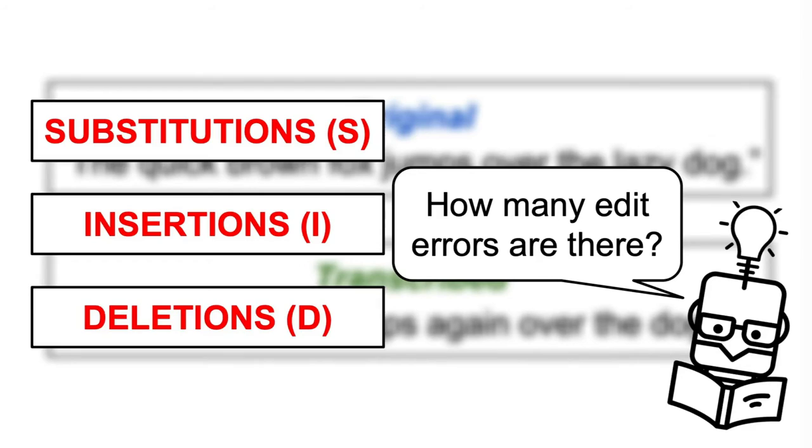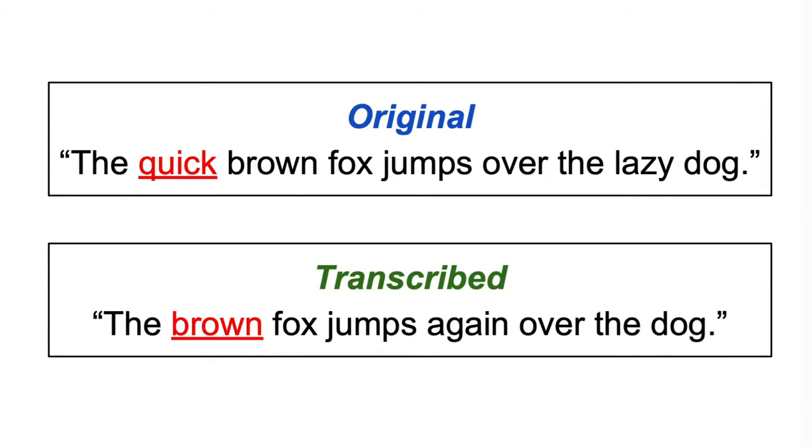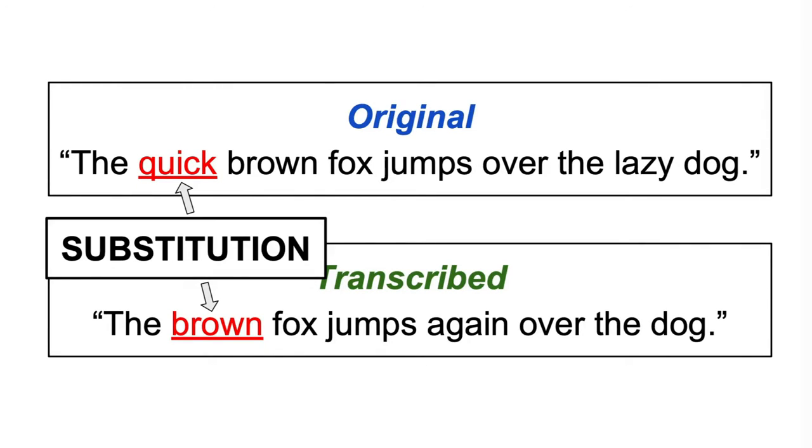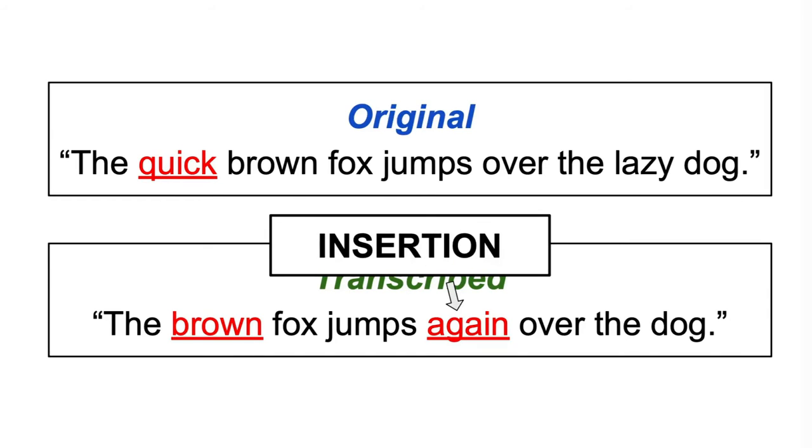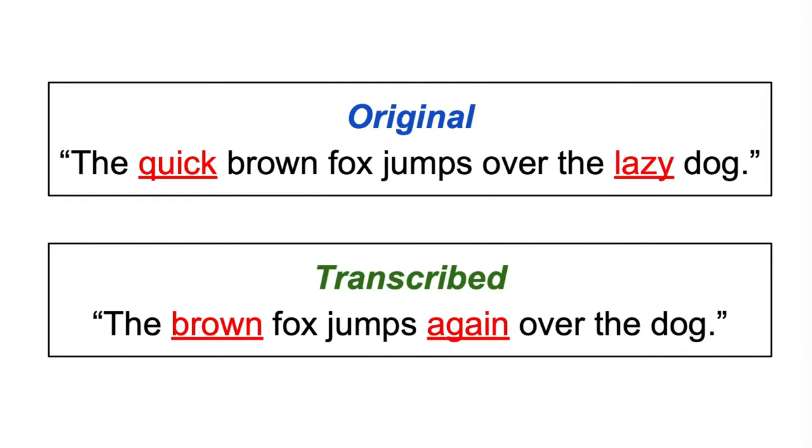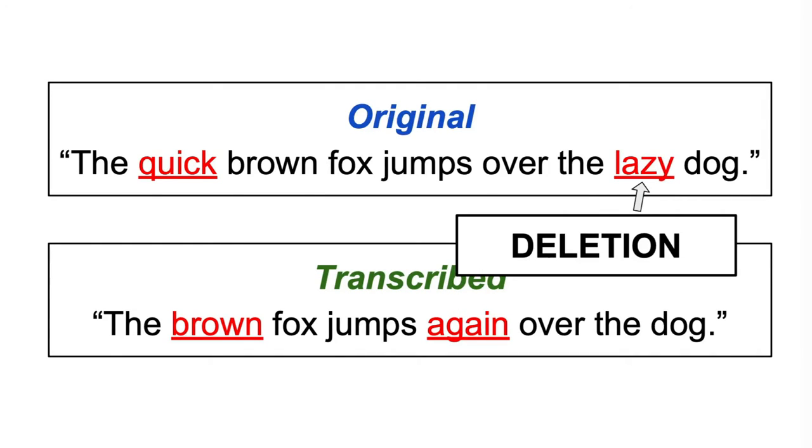In our example, the transcribed text has one substitution: quick, which is replaced with brown. One insertion: the transcribed text has the word again in it, which is not found in the original sentence. And one deletion: lazy is missing in the transcribed text. So the total number of errors is 3.